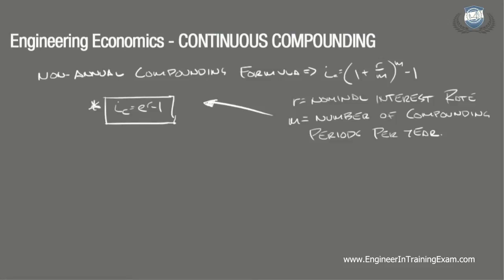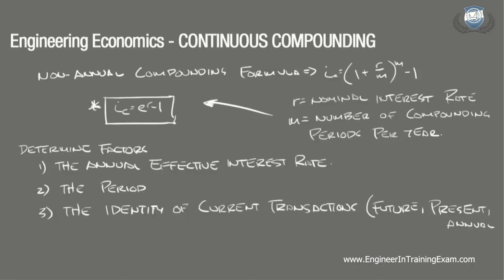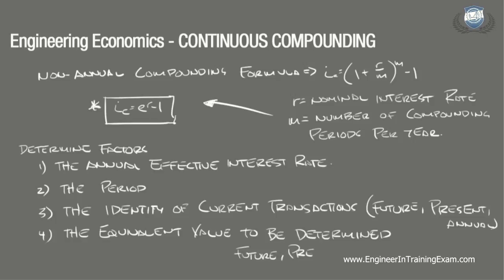Once the annual effective interest rate is determined, the goal remains the same: to convert transactions into equivalent transactions at some other point in time. The next step is to determine the various factors of importance. These factors include: number one, the annual effective interest rate, which we've already established; number two, the period; number three, the identity of the current transactions, whether they're future, present, or annual; and the equivalent value to be determined, whether it's a future, present, or annual value.